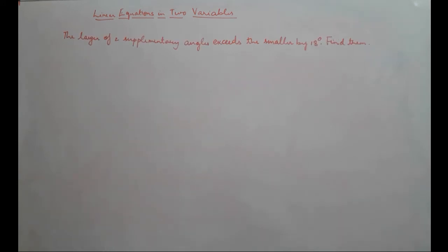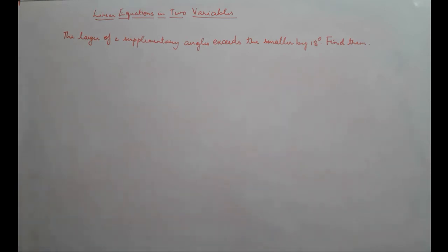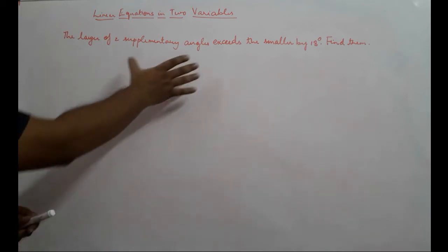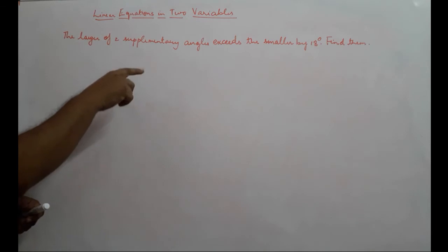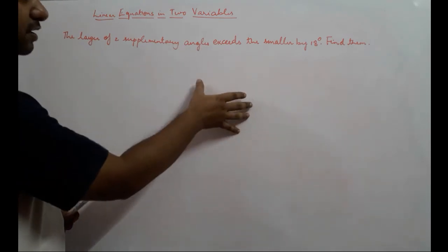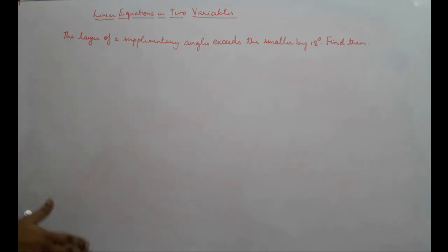Moving on to the next problem: the larger of two supplementary angles exceeds the smaller by 18 degrees — find them. There are two supplementary angles. Supplementary angles are those angles which when combined give 180 degrees, meaning the two angles when added give a total of 180 degrees. The larger of the two supplementary angles exceeds the smaller by 18 degrees, so there is a difference of 18 degrees between them. We need to find the two angles.